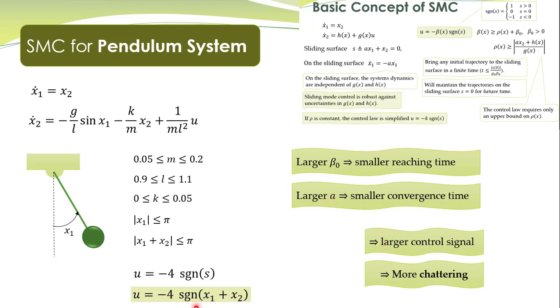If you take a larger value of β₀ or larger value of a, then the control action will be larger. Obviously, if you take larger β₀, this beta will be larger. Likewise, if you take larger a, this ρ(x) will be larger, and beta will be larger. Larger beta means larger chattering. Chattering is due to this discontinuous control law, and larger is the value of this constant, larger will be the amplitude of chattering.